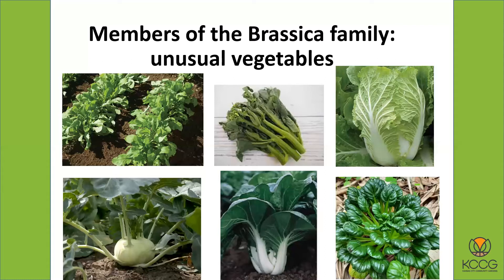In the upper right-hand corner we have napa cabbage, sometimes called Chinese cabbage. Right below that is another Asian brassica called tatsoi — we actually carry that one here at Kansas City Community Gardens. We have seeds for that plant. There are many other unusual Asian vegetables in this family, but these are just some of the more common ones you're likely to see at the grocery store or in the seed catalog.